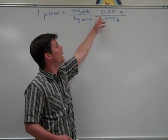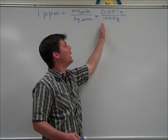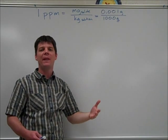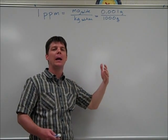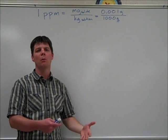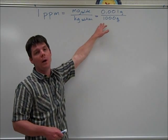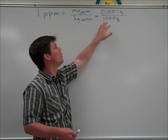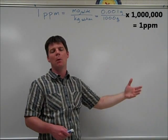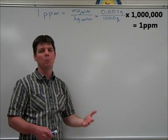As we think about this, if we had one milligram, that would be 0.001 grams, and one kilogram of solution would be 1,000 grams. So if we have one one-thousandth of a gram divided by 1,000 grams, that's where we're coming up with the one part per million, or one part in one million. If we were going to calculate this into parts per million, we would take 0.001 grams, divide by 1,000, and then multiply by one million. We would come up with an answer of one part per million.